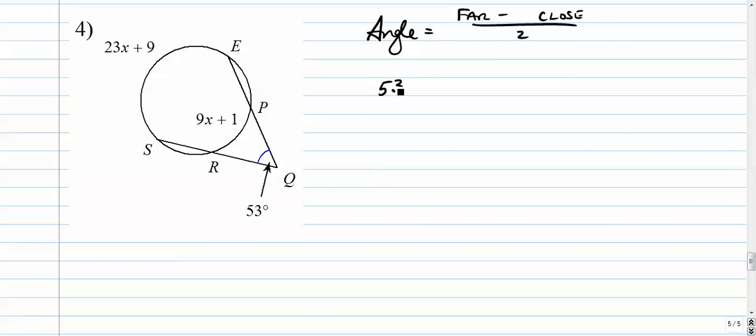In this case, the angle is 53. The faraway arc is 23x plus 9 minus the close arc is a binomial. So, we have to put it in parentheses. We put it in parentheses because of that minus sign in between them. It's actually going to change the sign of everything after it.